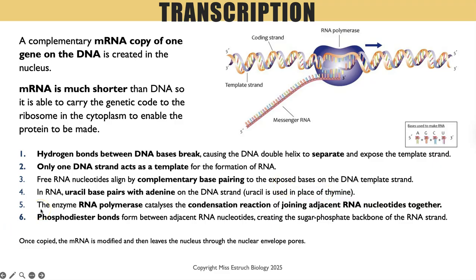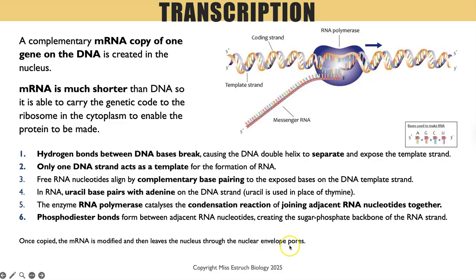There's always a mark for knowing the role of the enzyme RNA polymerase, which catalyzes the condensation reaction between adjacent RNA nucleotides, joining them together. This creates phosphodiester bonds between those nucleotides, forming the new mRNA strand. Once the mRNA is copied, it gets modified before it can leave the nucleus through the nuclear pores.